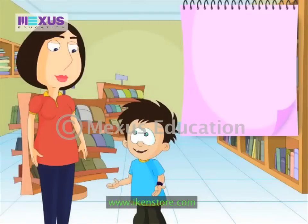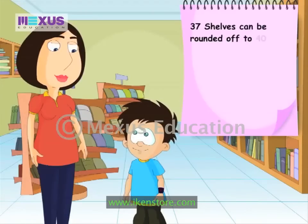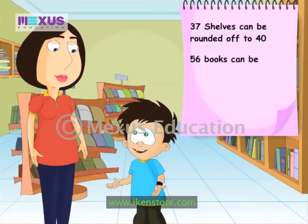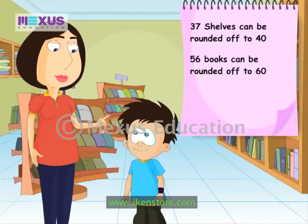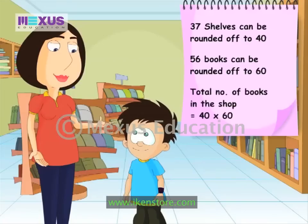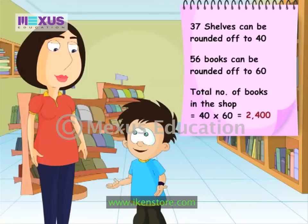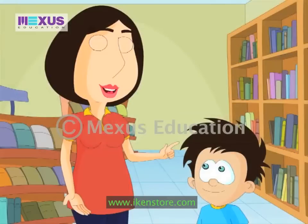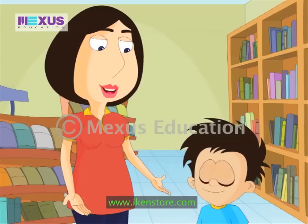Mom, this bookshop has 37 shelves. So you can round it off to 40. And each shelf has 56 books. So does that mean I can round it off to 60? Yes! Okay! Let's multiply now. What's 40 into 60, JC? 2400! This bookshop has got 2400 books. Approximately 2000 books, JC. And you know what we just did? We just estimated the total number of books in this bookshop.